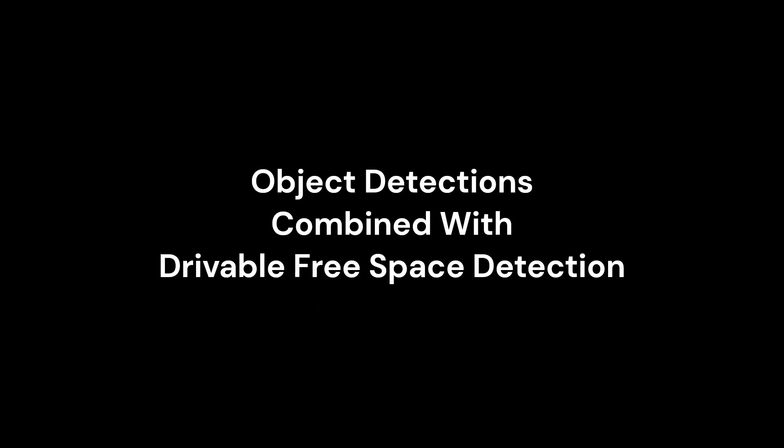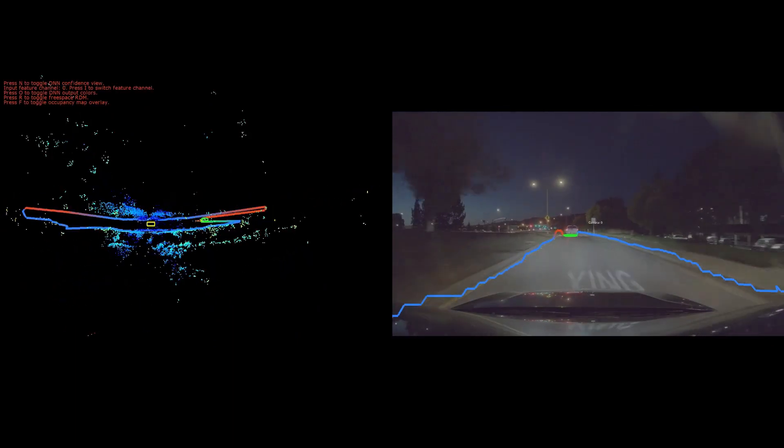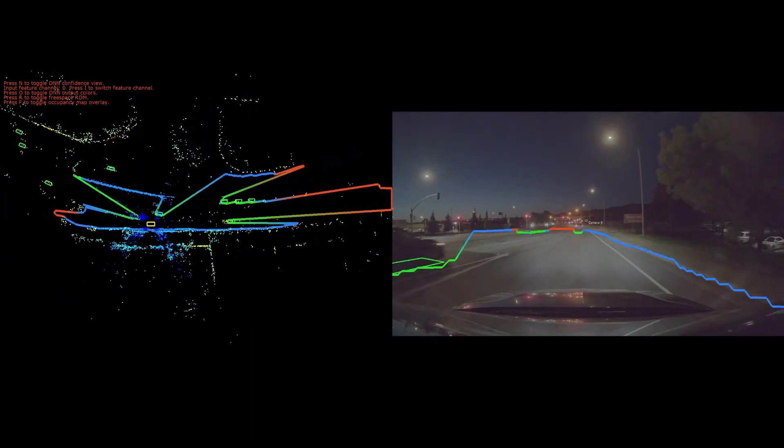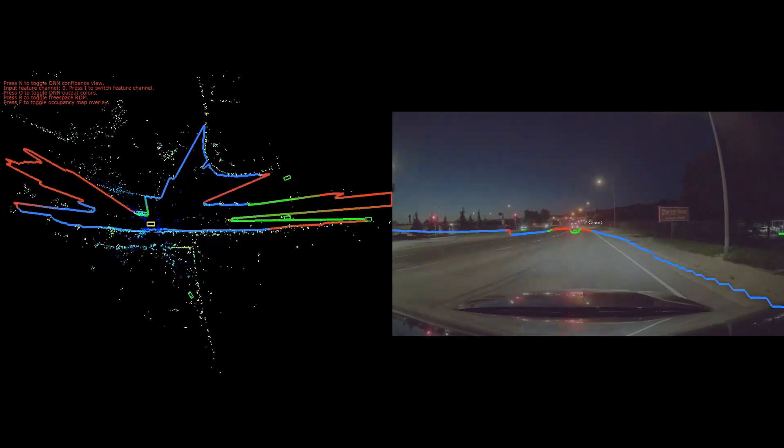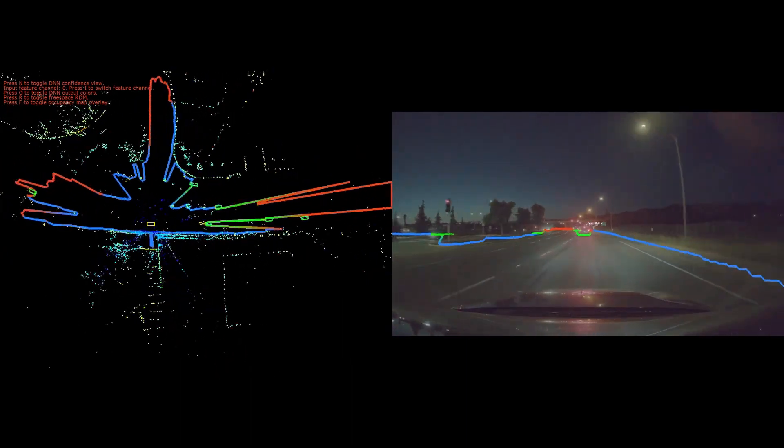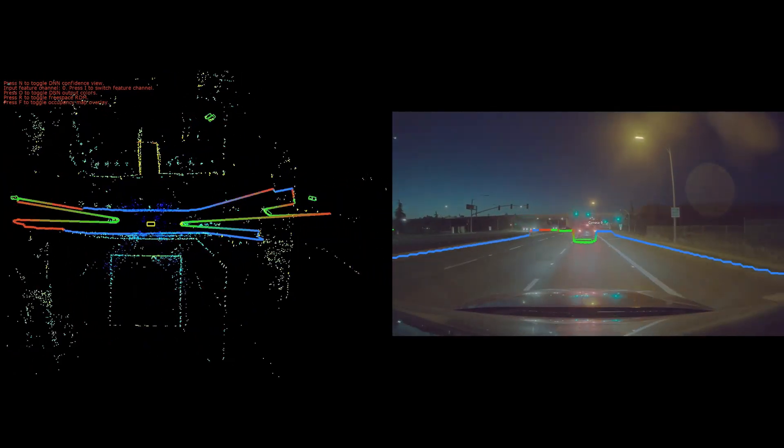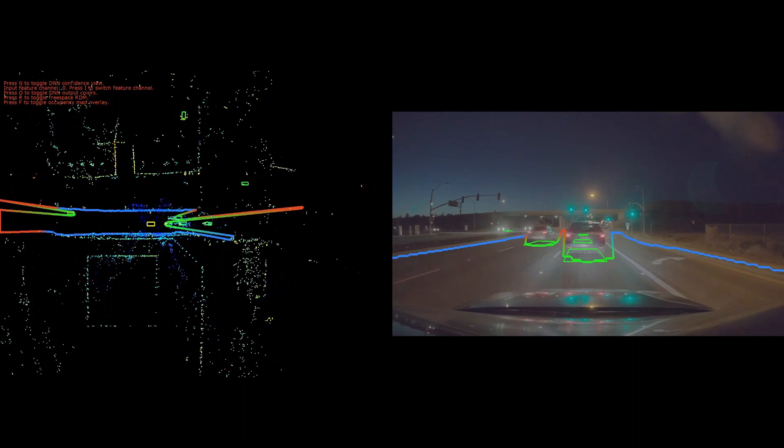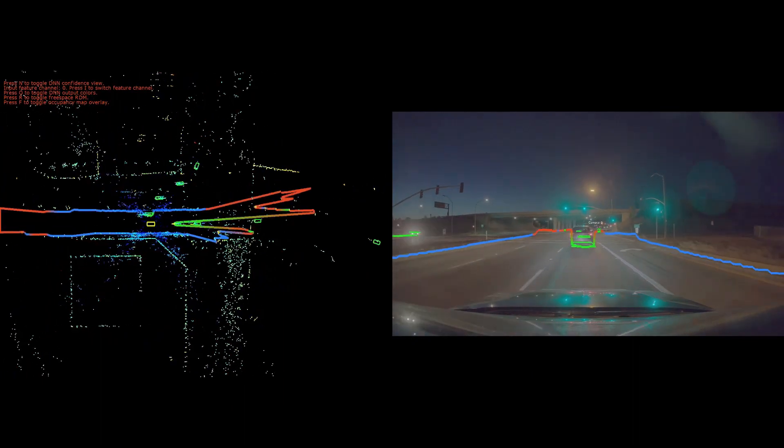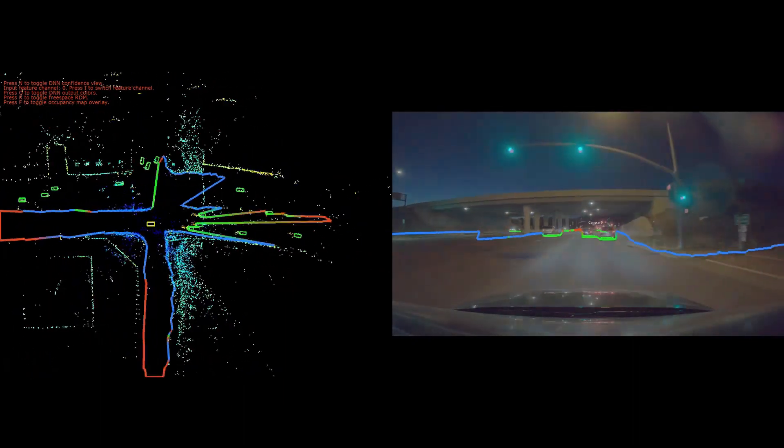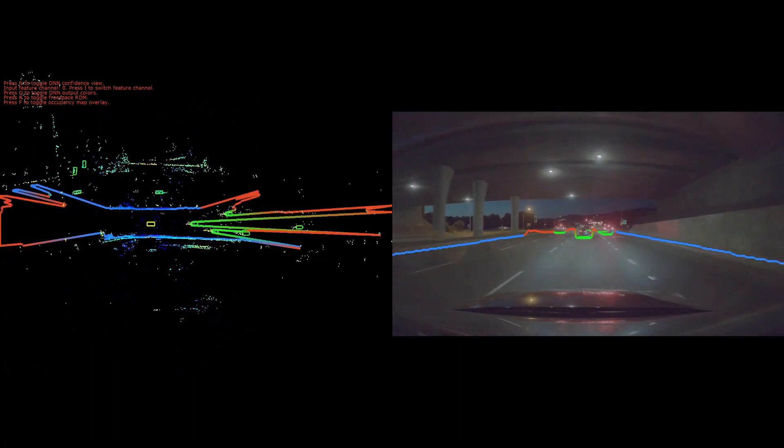Here we show the network is able to jointly predict both the obstacles and the drivable free space in an urban scenario. Note, the network provides respectable results around many challenging conditions such as occlusions and radar detection returns from elevated obstacles. The output of the network is a set of oriented top-down bounding boxes along with polylines representing the free, drivable space.